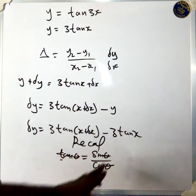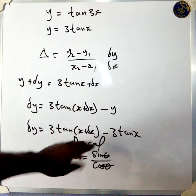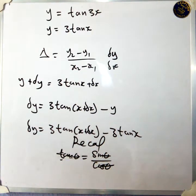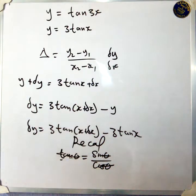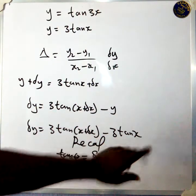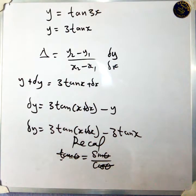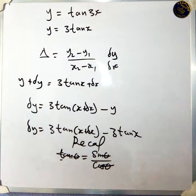So your first angle is x plus delta x, and the second angle is x. There are two angles here: x plus delta x is the first angle, and x is the second angle.